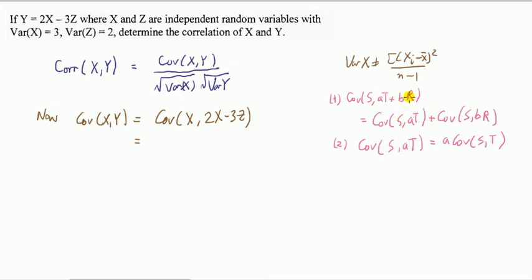Also, the covariance between S and this, where you have the constant - the constant comes out, and then it's covariance of S and T. Both of these can be shown using expectations.